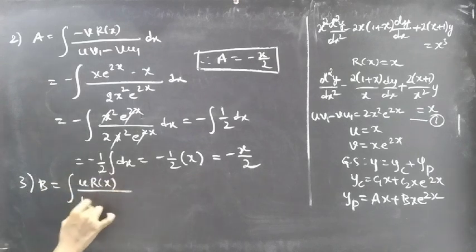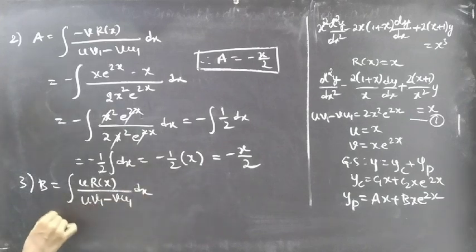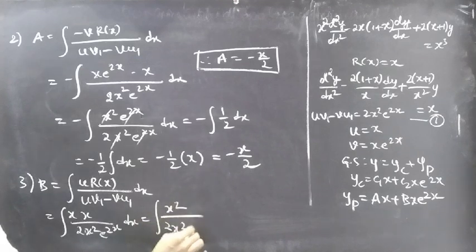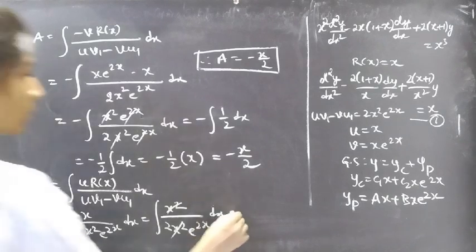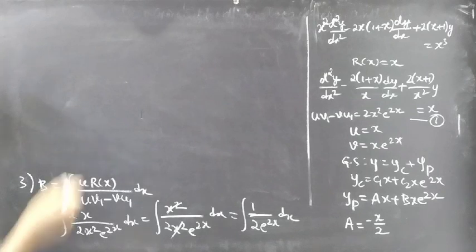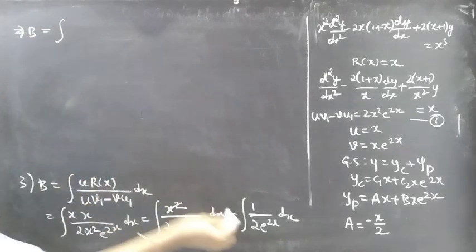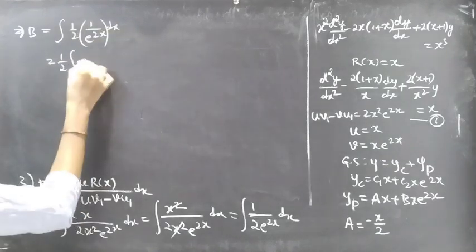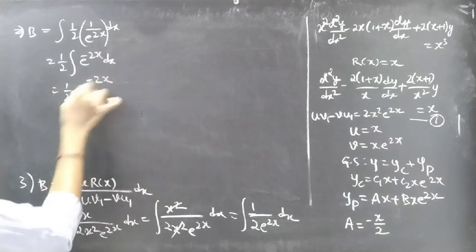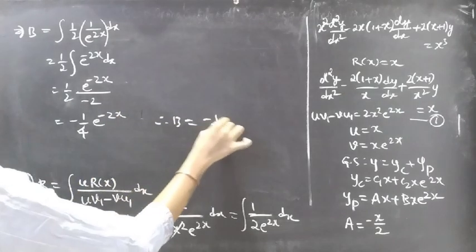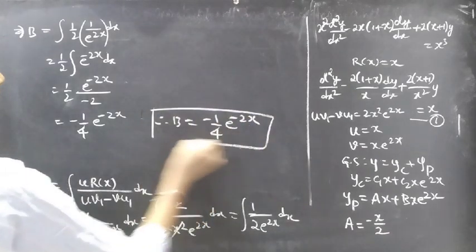Finding b: b = ∫ u·r(x) / (uv₁ − vu₁) dx = ∫ x·x / (2x²e^(2x)) dx = ∫ x² / (2x²e^(2x)) dx. The x² cancels, giving (1/2)∫e^(−2x) dx = (1/2)·(−e^(−2x)/2) = −(1/4)e^(−2x). Therefore b = −(1/4)e^(−2x).